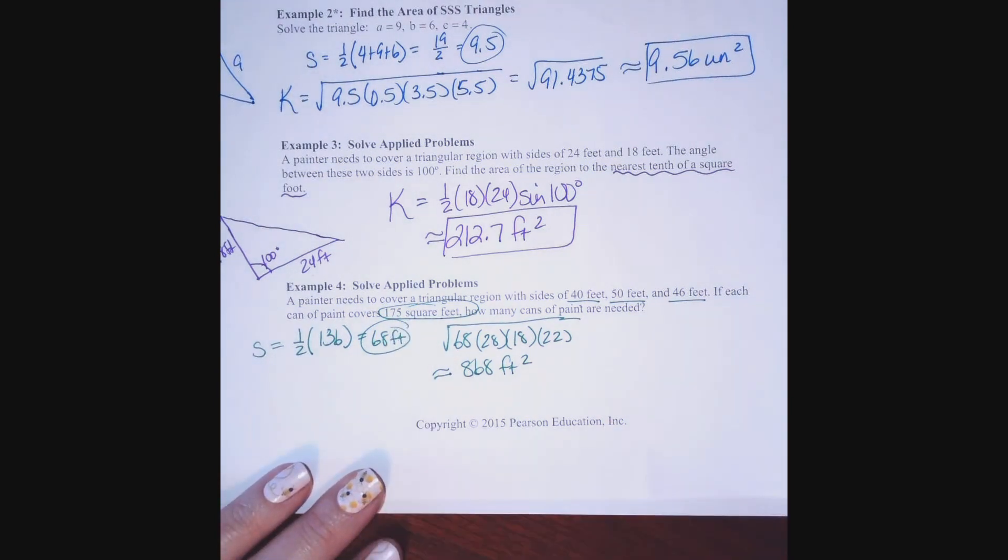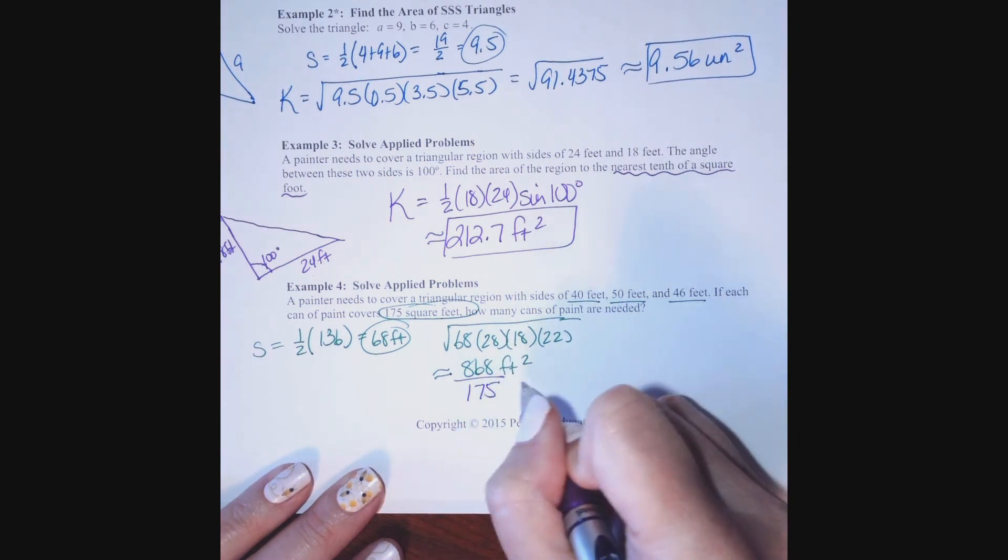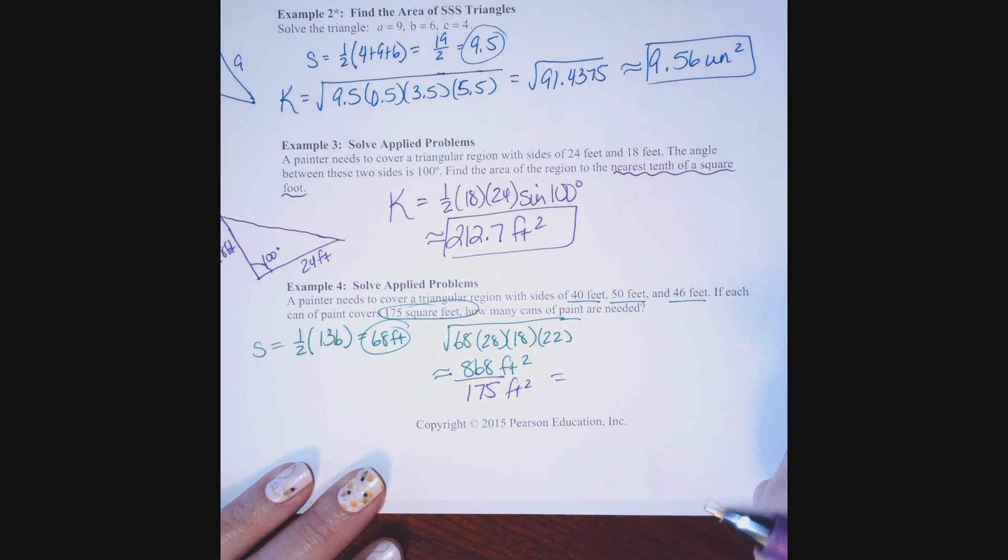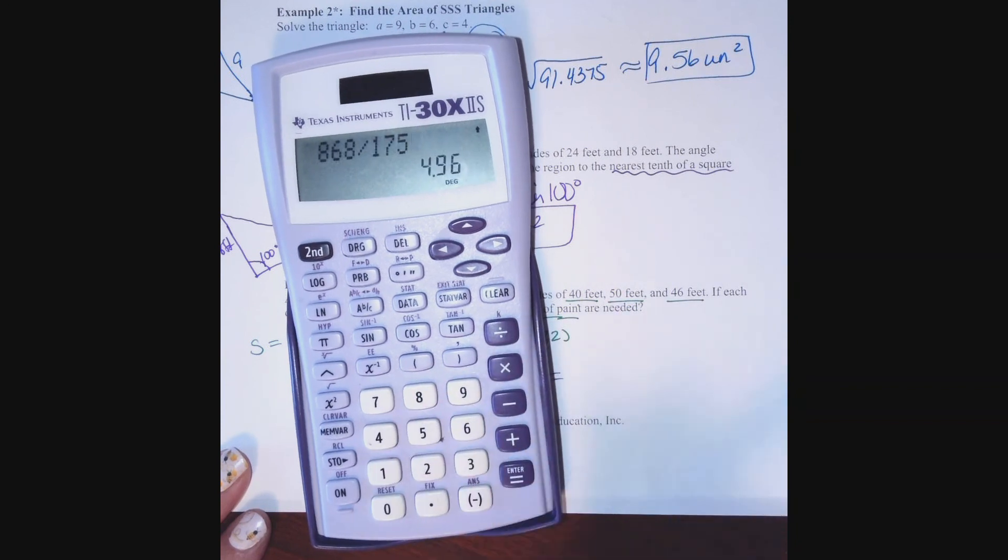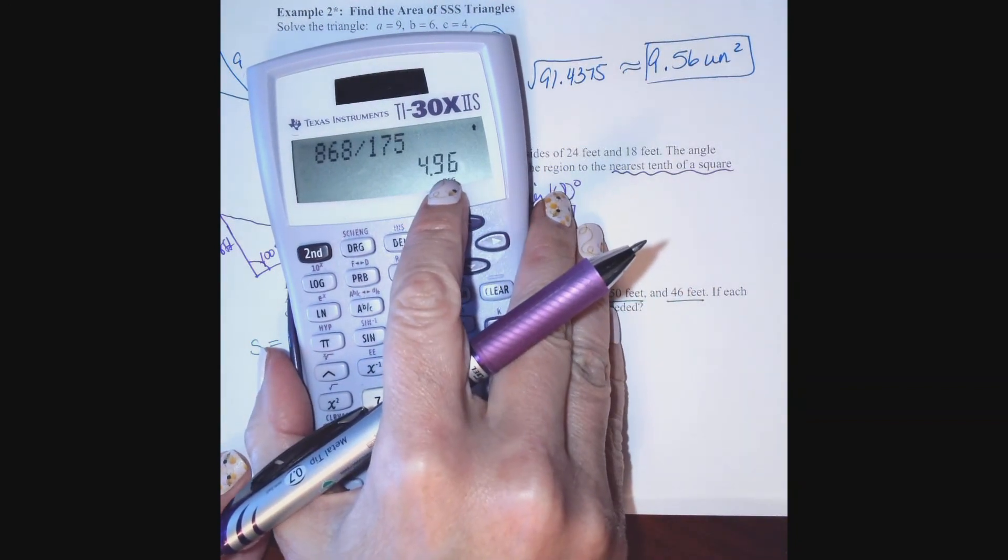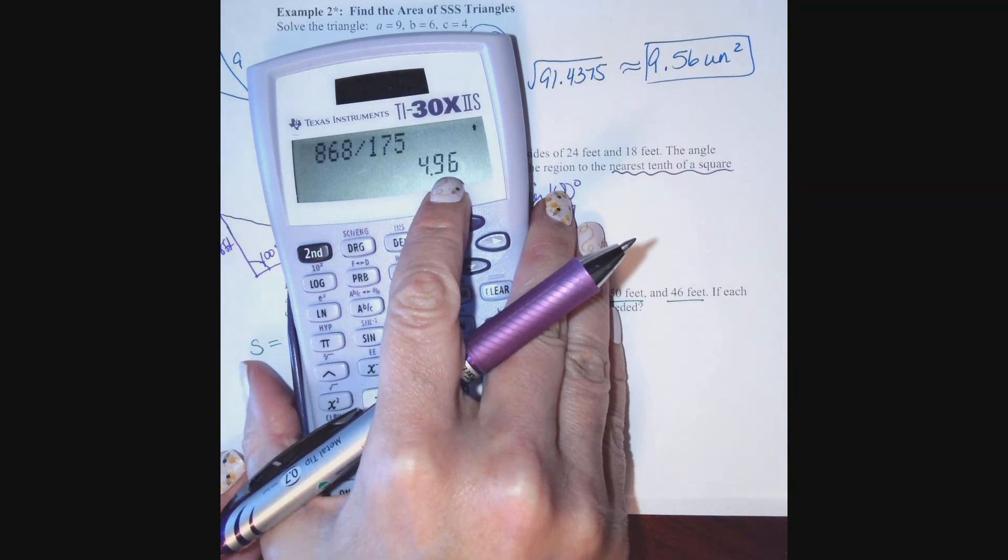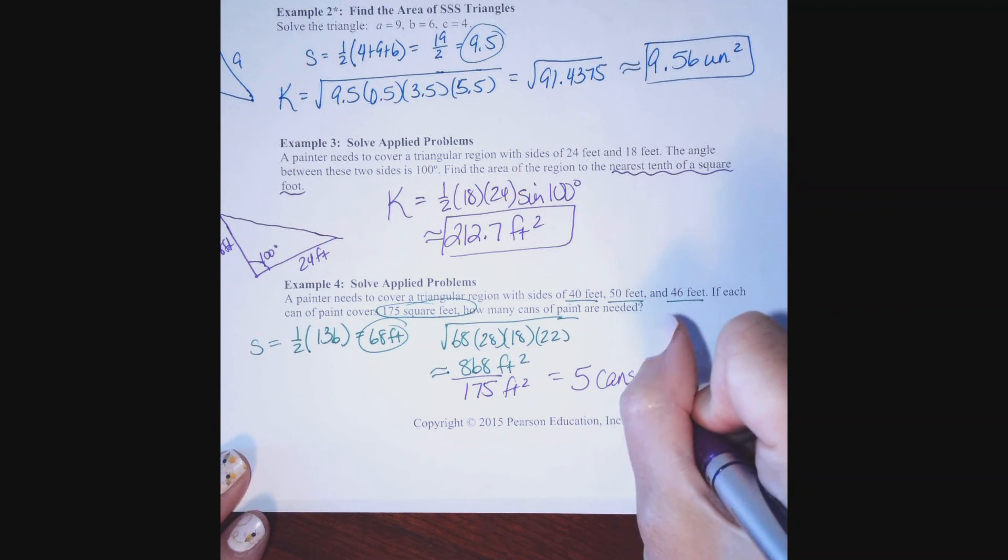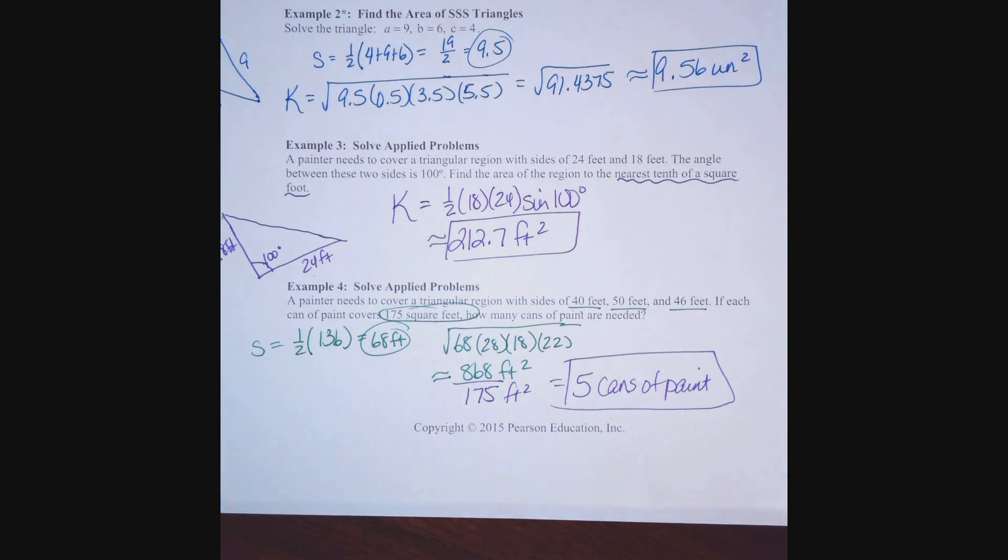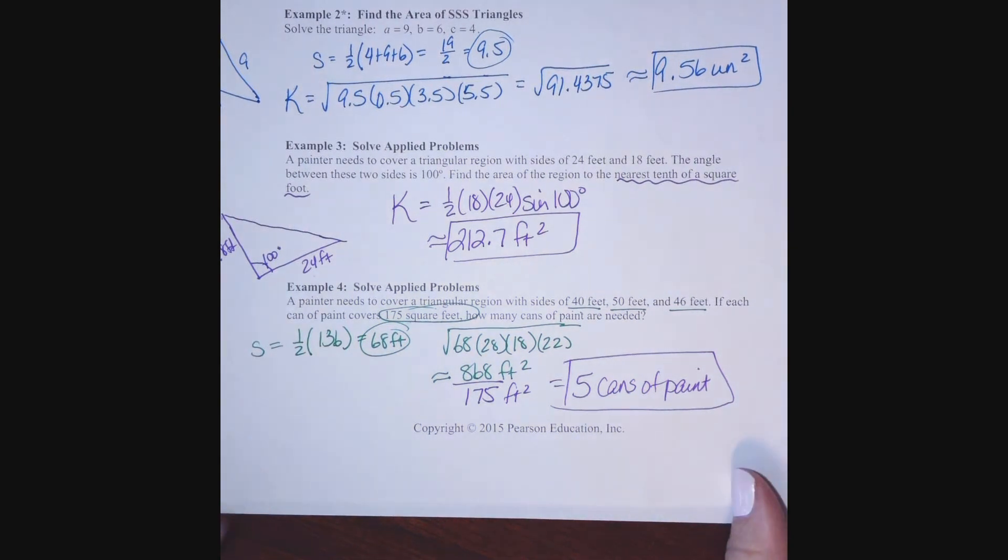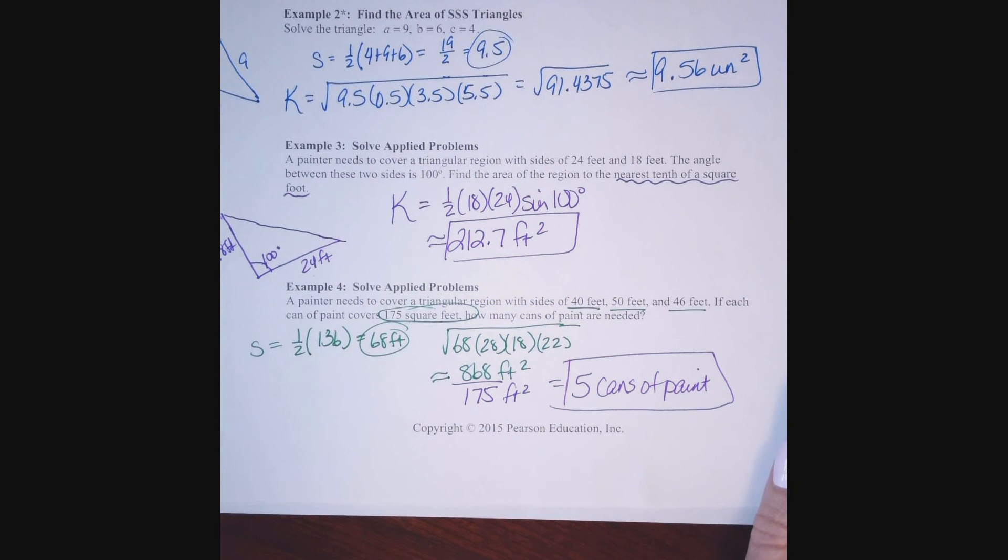Each can of paint will paint 175 square feet. Which means I'm going to need, let's see, 868 divided by 175. I'm going to need 4.96 cans of paint, right? Well, no, I can't buy 0.96 cans of paint. I'm going to need 5 cans of paint. Now, notice that with application problems, you need to answer them reasonably. For example, if you are trying to see how many buses you need to reserve for the class trip, I can't reserve half a bus. It doesn't matter if I just have three students left over. I've got to get one more whole bus for them. So, make sure that when you round, you round appropriately according to your application involved.